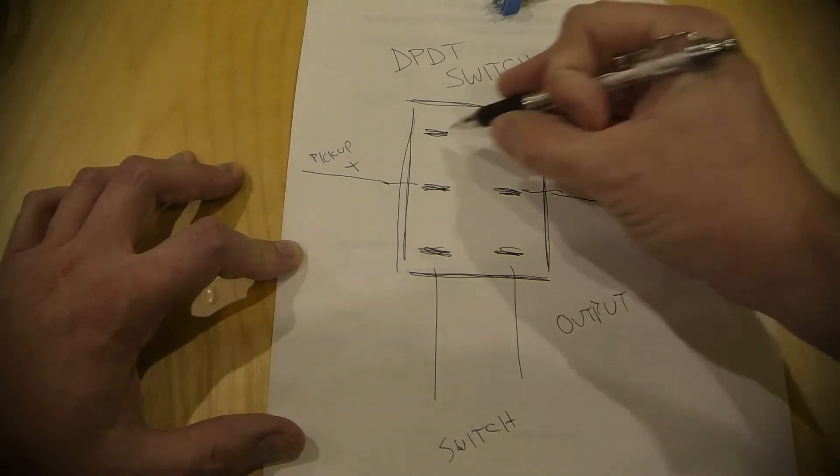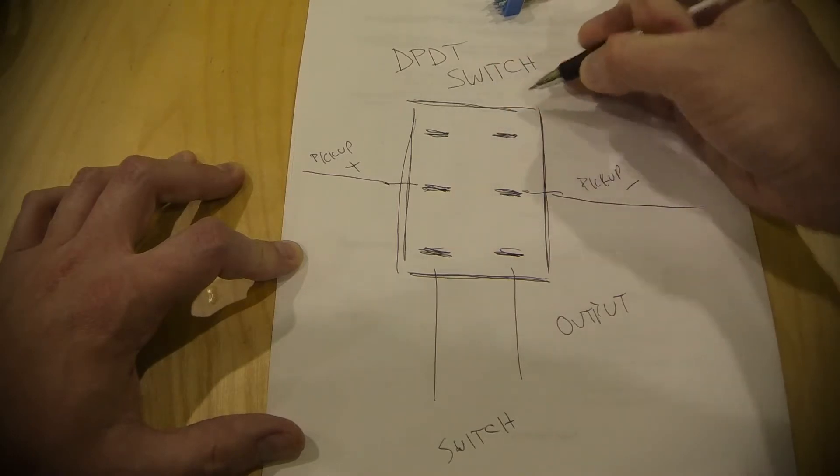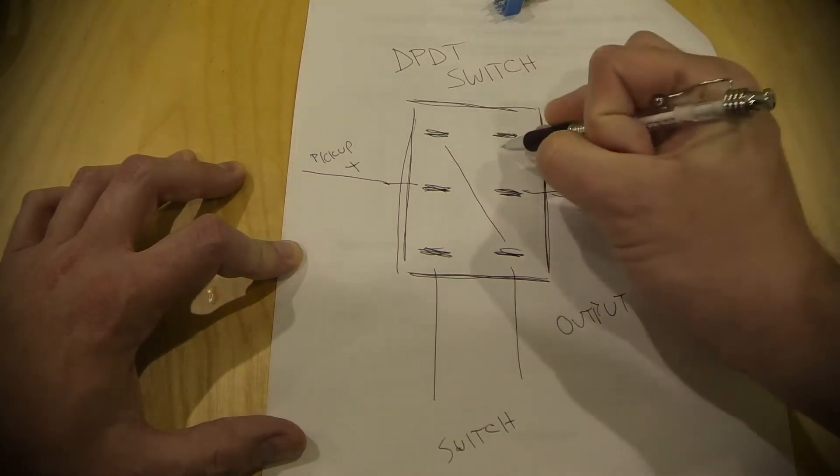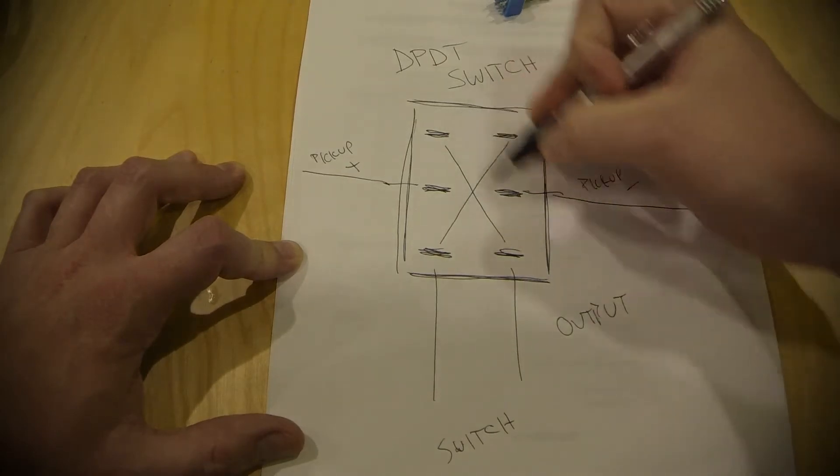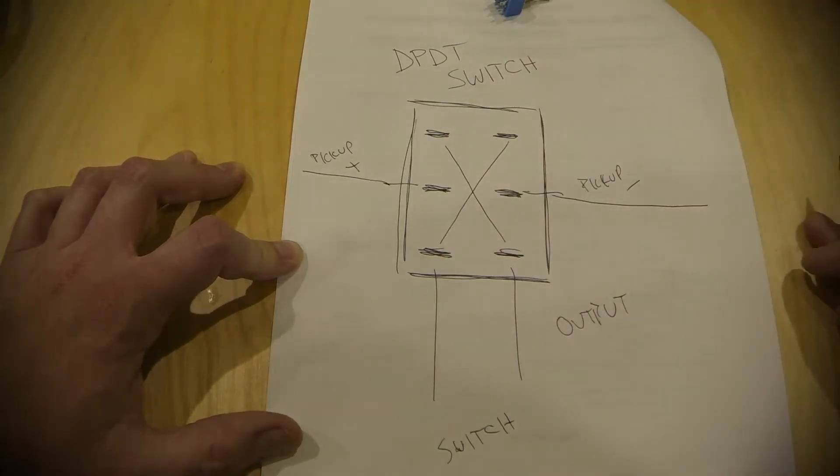And all you want to do is your other two connections here. You seriously cross them over. That's all you have to do. You basically create an X and cross your switch.